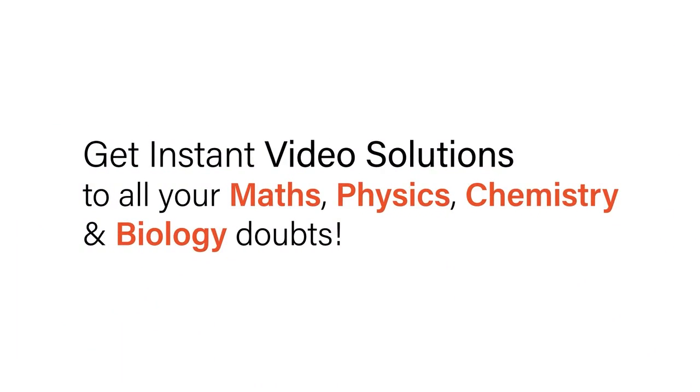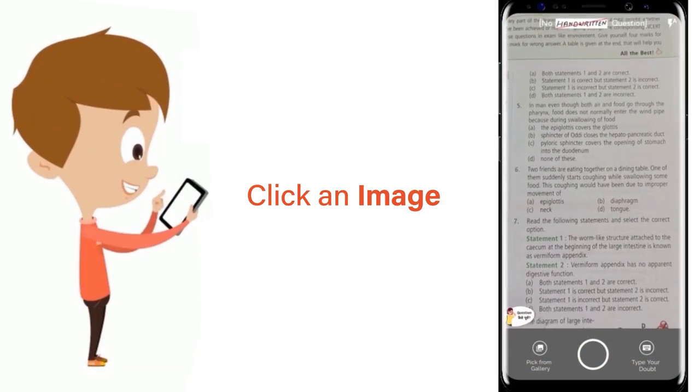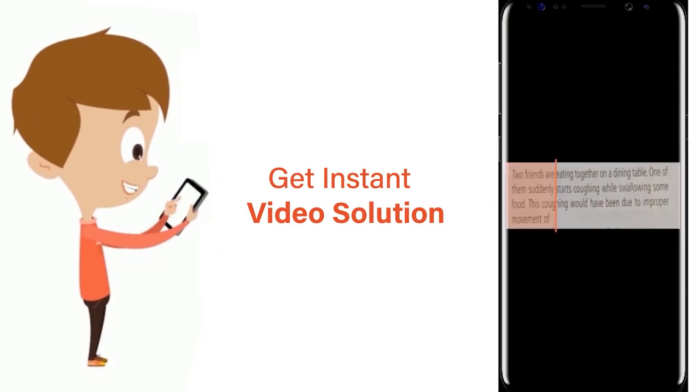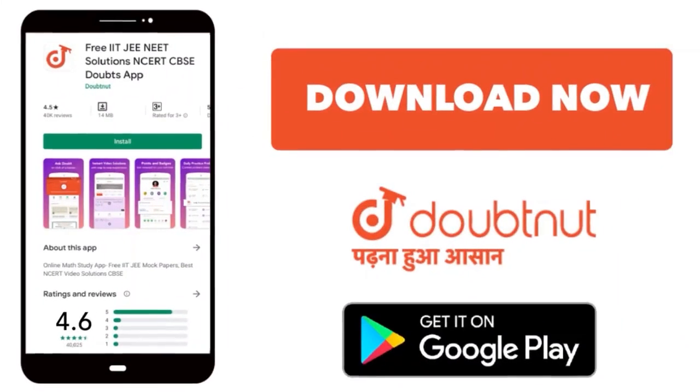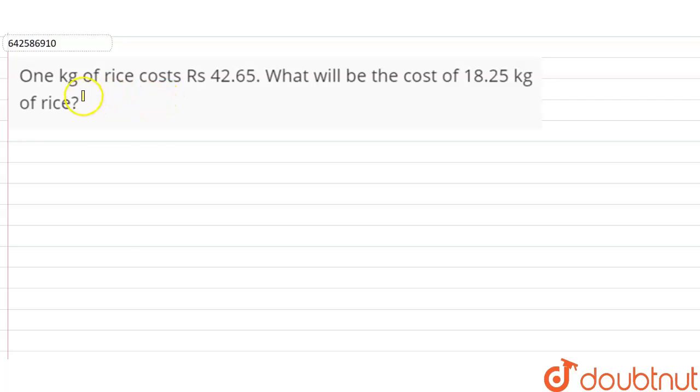With Doubtnet, get instant video solutions to all your maths, physics, chemistry, and biology doubts. Just click the image of the question, crop the question, and get instant video solution. Download Doubtnet app today. Hi students, our question is one kg of rice costs rupees 42.65, what will be the cost of 18.25 kg of rice?